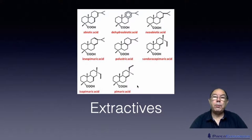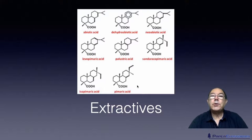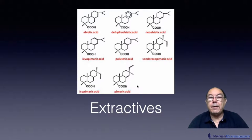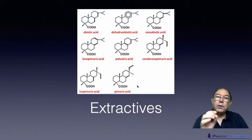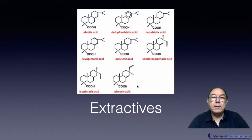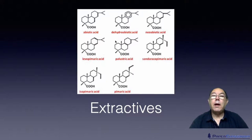These molecules also provide a sort of antiseptic effect to a tree — some of them, like tea tree oil. Some of these molecules, when produced in the tree, migrate outwards towards the bark. Their purpose is that if any fungal spores land on the surface of the tree, on the bark, these things will kill off that fungal spore so that fungi don't grow on trees. When a tree is dying or dead, these molecules are no longer produced, and so fungus is able to grow on the surface.